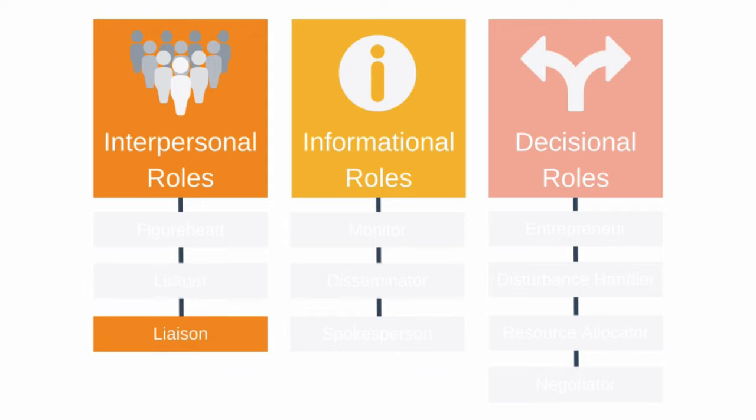The final interpersonal role is liaison. As a manager, you have to connect your team to others outside of the vertical chain of command on behalf of your organisation. This can mean working with both internal and external contexts. Some examples may be working with a customer, meeting with a supplier, or working with a recruitment specialist.